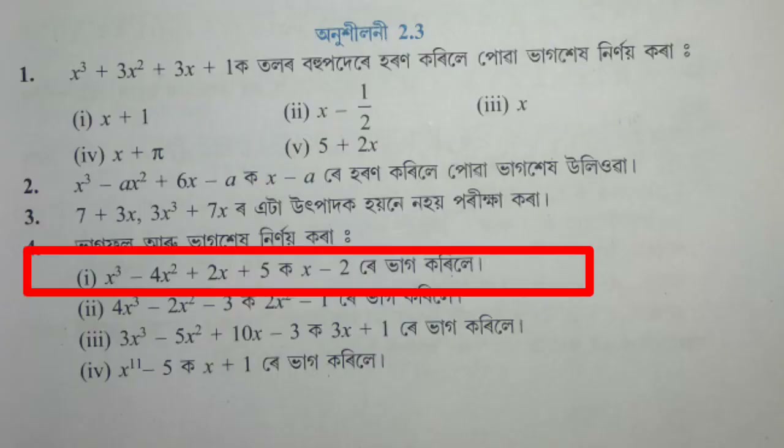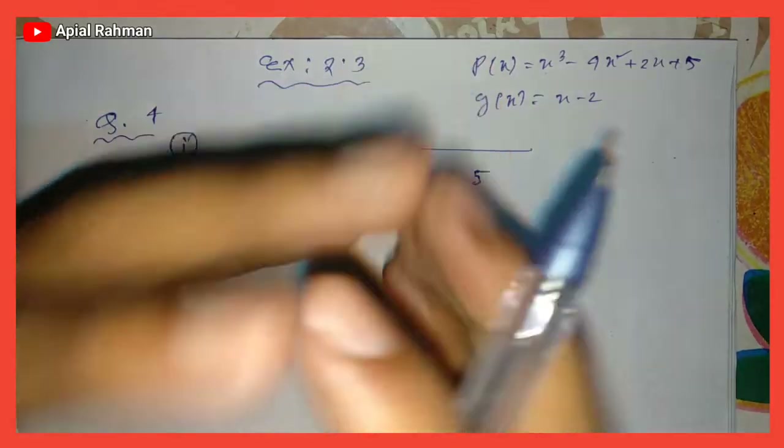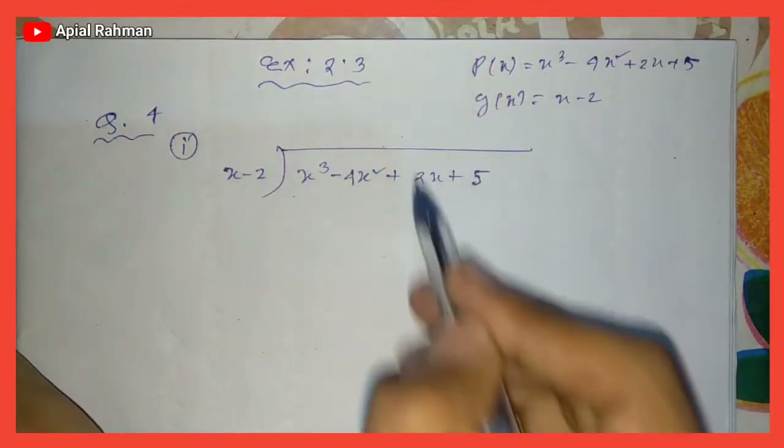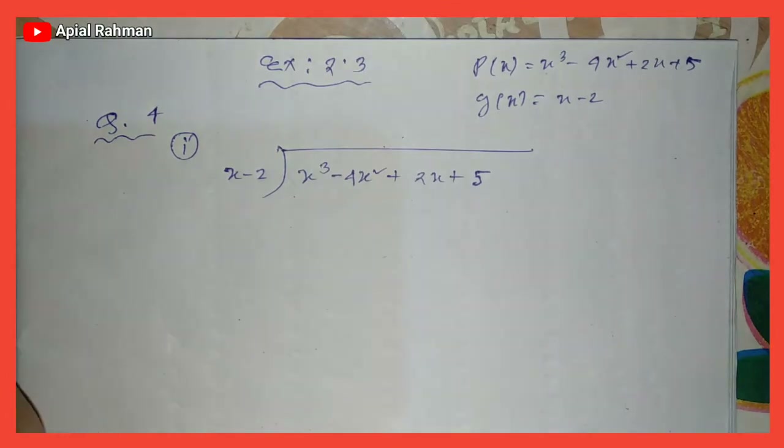Let's take the question: x cubed minus 4x squared plus 2x plus 5, divided by x minus 2 or x minus 3. Find the quotient and remainder.